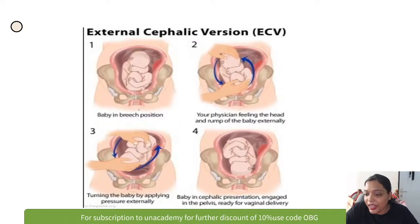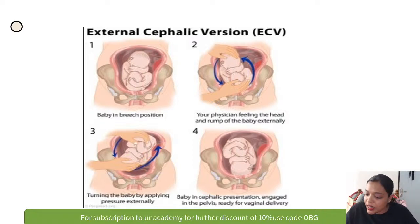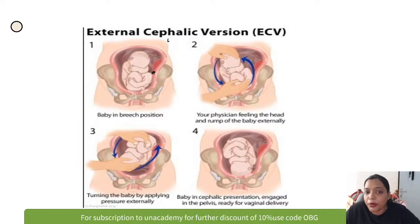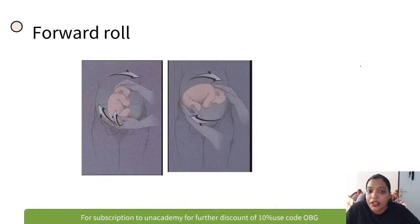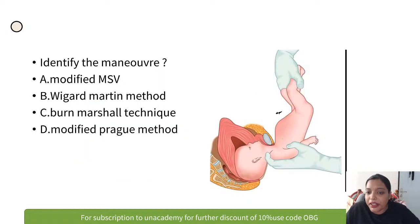External cephalic version (ECV) is where you turn the buttocks up and pull the fetal head down — this is the backward flip. You should know every point about ECV. This second image shows the forward roll of ECV.